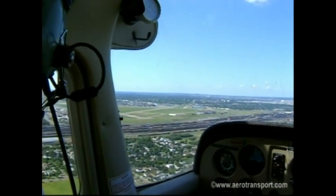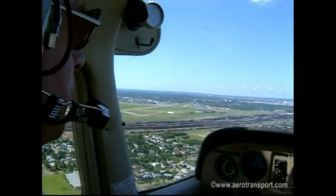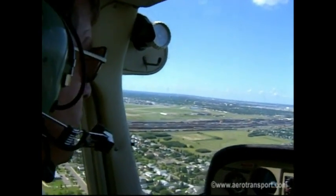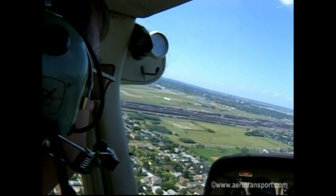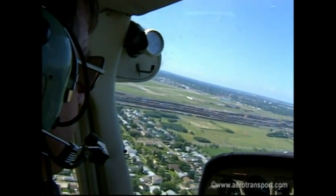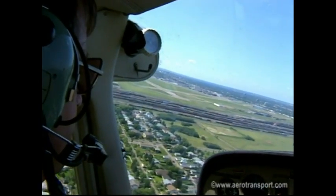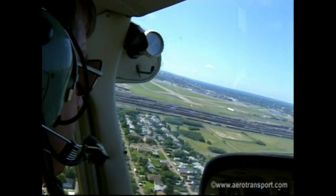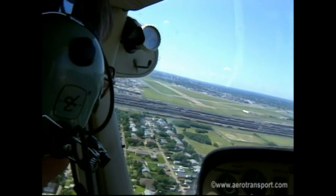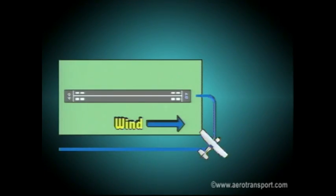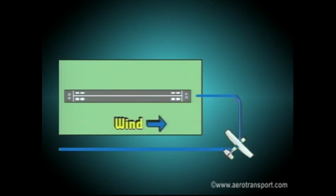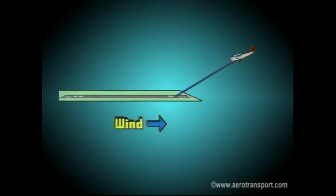When flying the circuit it is crucial that you judge the whole pattern in relation to the runway, not to other points on the ground. This will help you judge the type of landing approach you should make. The latter part of the circuit is usually called the approach. Exactly where you will turn from downwind to base will depend upon the wind.